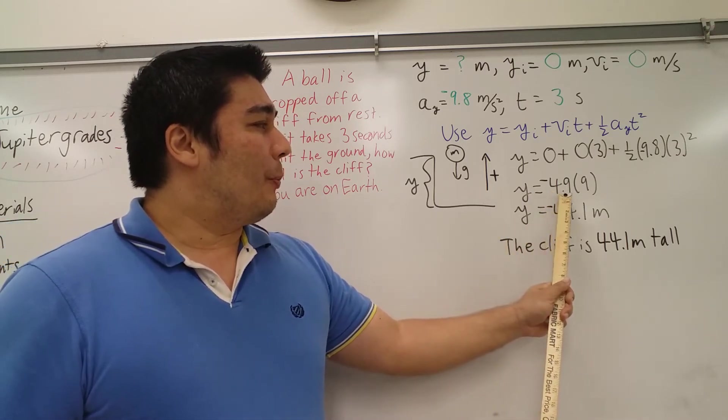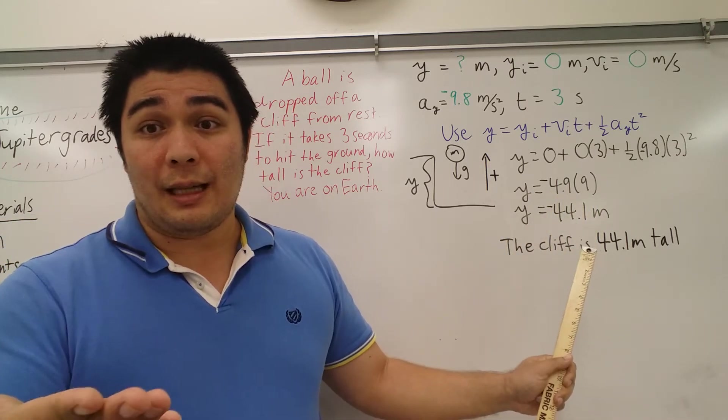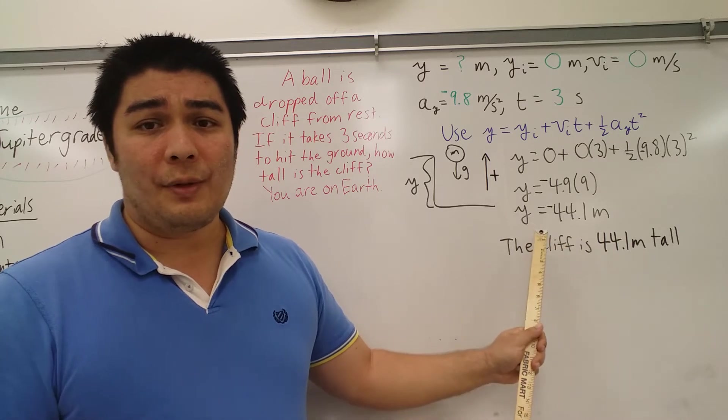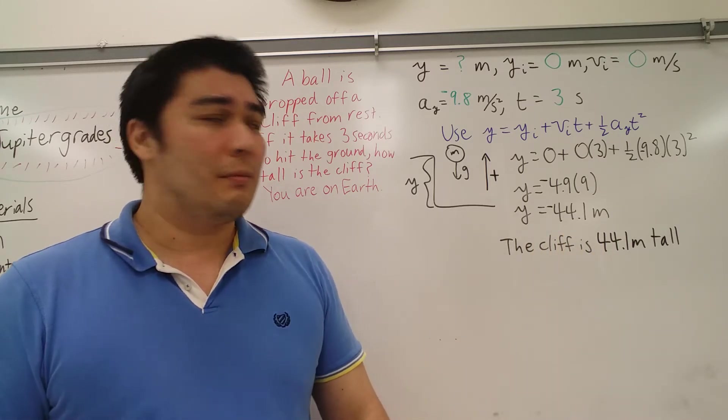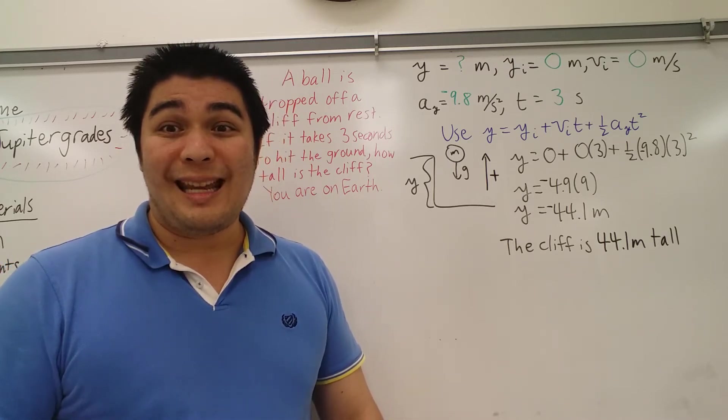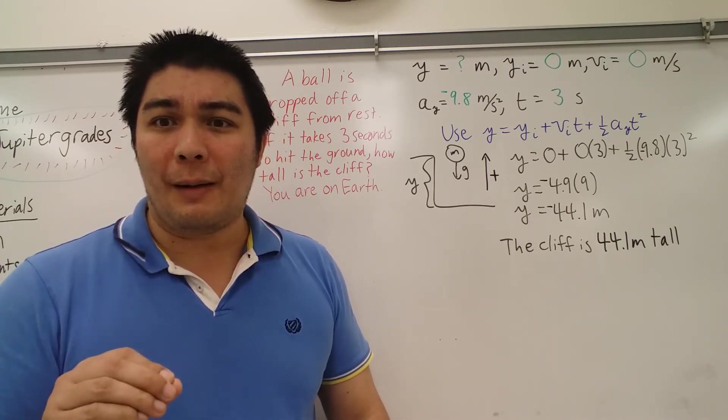So what we find, negative 4.9 times 9, like we did in the last video when you pulled out your calculator, you get the answer of negative 44.1 meters. Wait a minute, it's negative. Is that a problem?